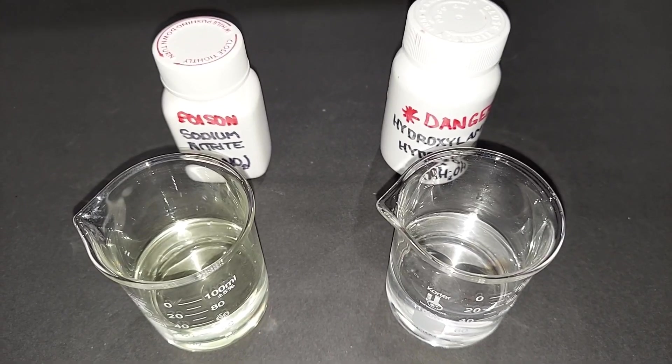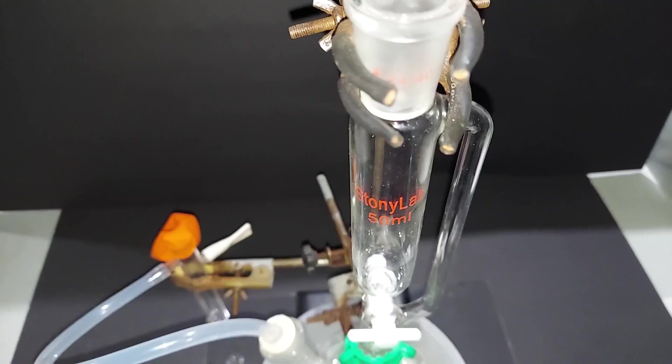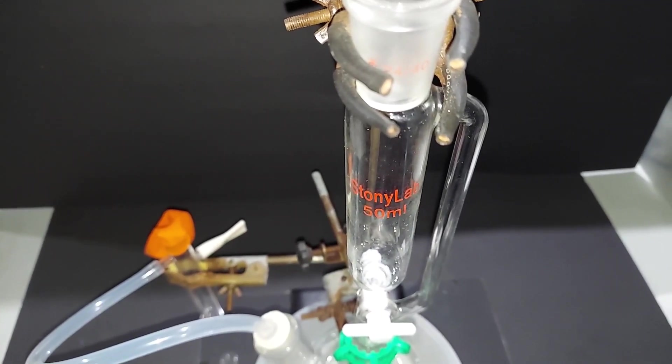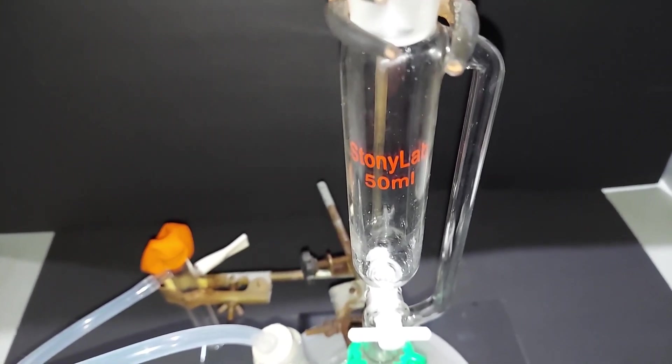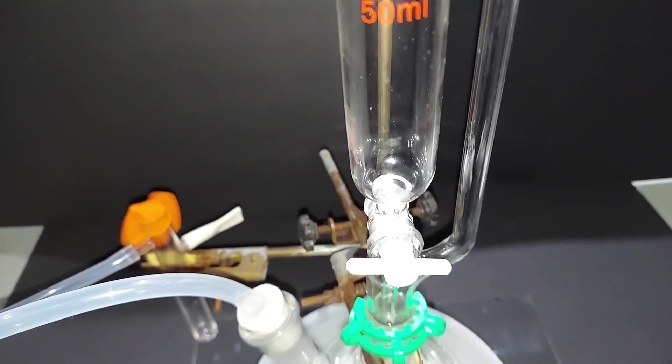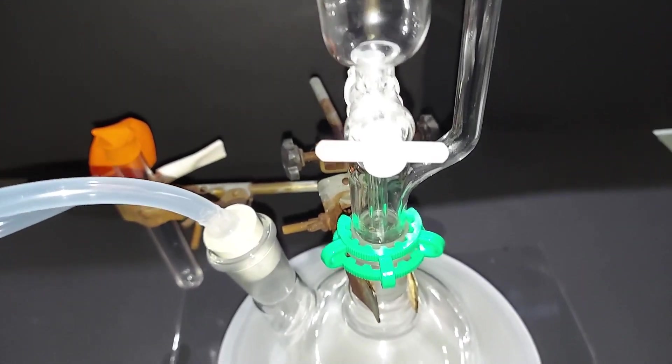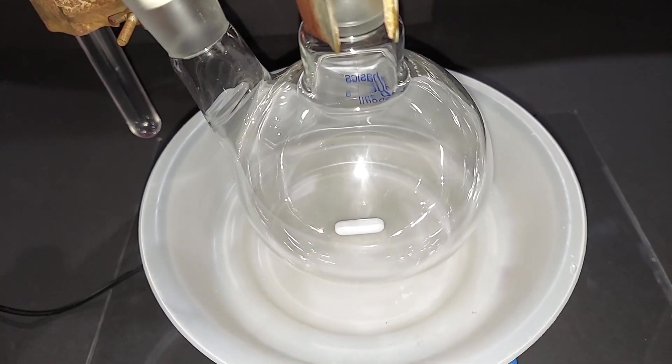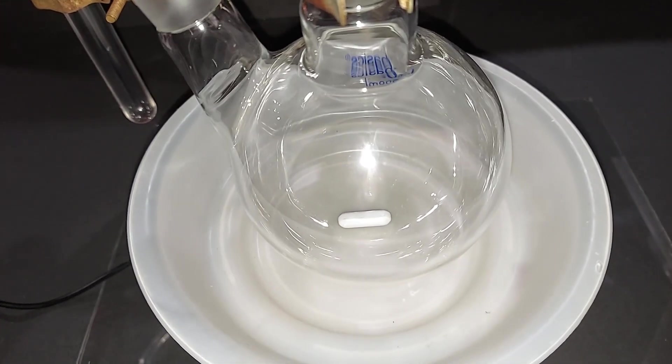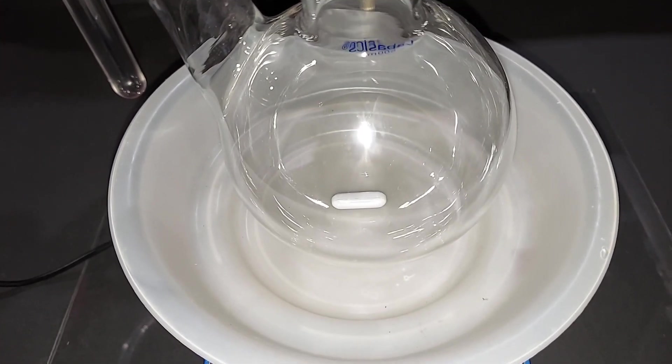The two solutions are ready to go. You heard me mention that I tried a separatory funnel for this and I did it twice, it didn't really work all that great. So I have a 50 milliliter addition funnel here which will have the sodium nitrite and that will drip down here into this 500 milliliter round bottom flask. Of course there'll be ice around here and it will contain the hydroxylamine hydrochloride.